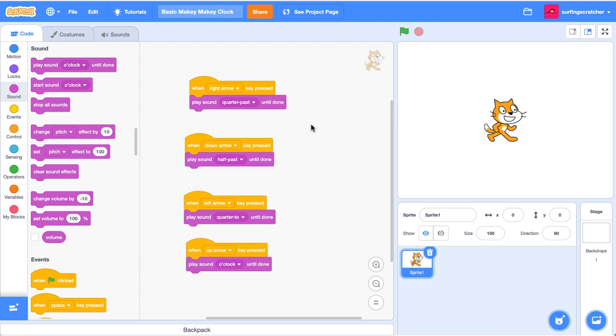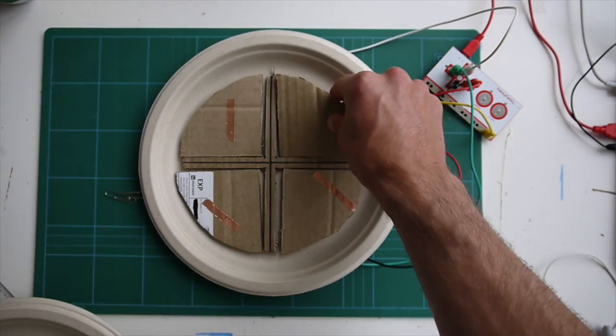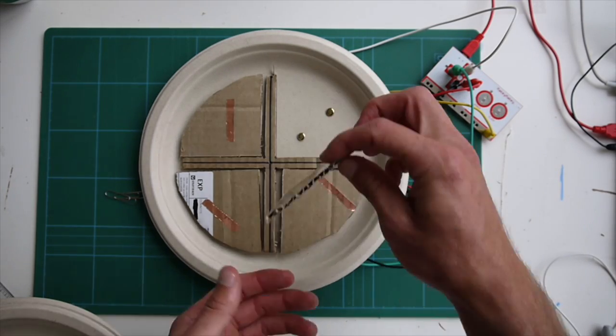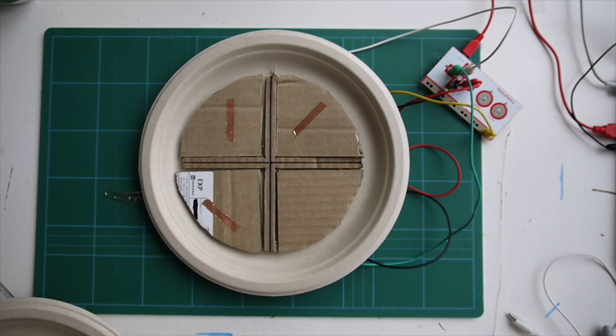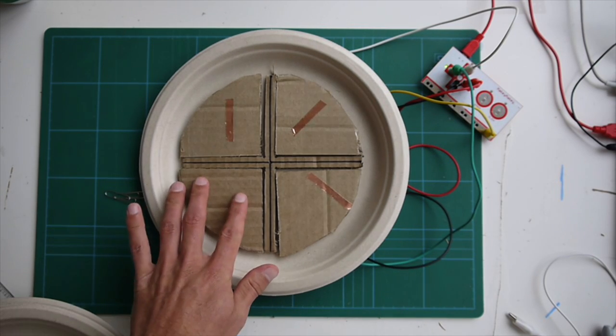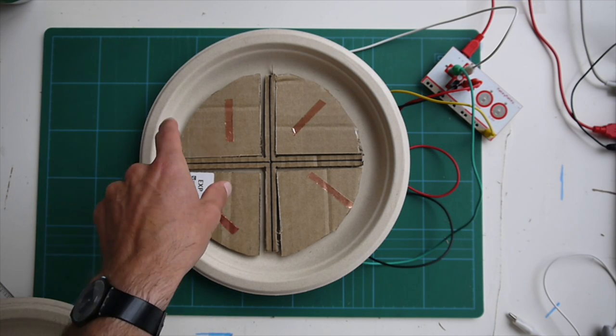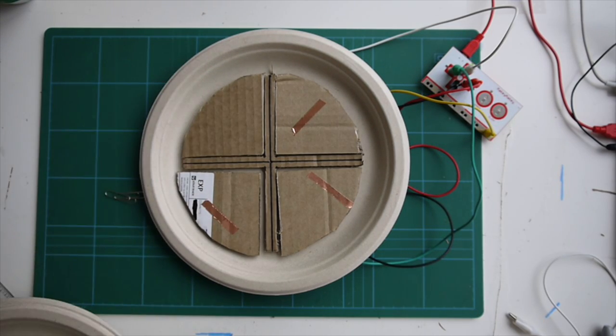When I flip over the paper plate you'll see that I've got my four segments here ready to go. Over here in Scratch you'll just see for the moment I've got when the right arrow, down arrow, left arrow and up arrow is pressed. I've just got my recordings here. Our final project won't be like this but it's good enough for our test. So I'm going to turn over one of these pieces and let's see what happens. It's quarter past. Now we'll turn over the half past. It's half past. Let's turn over the quarter to. It's quarter to. And finally when our minute hand has made it all the way around the clock once it is o'clock. It's o'clock.